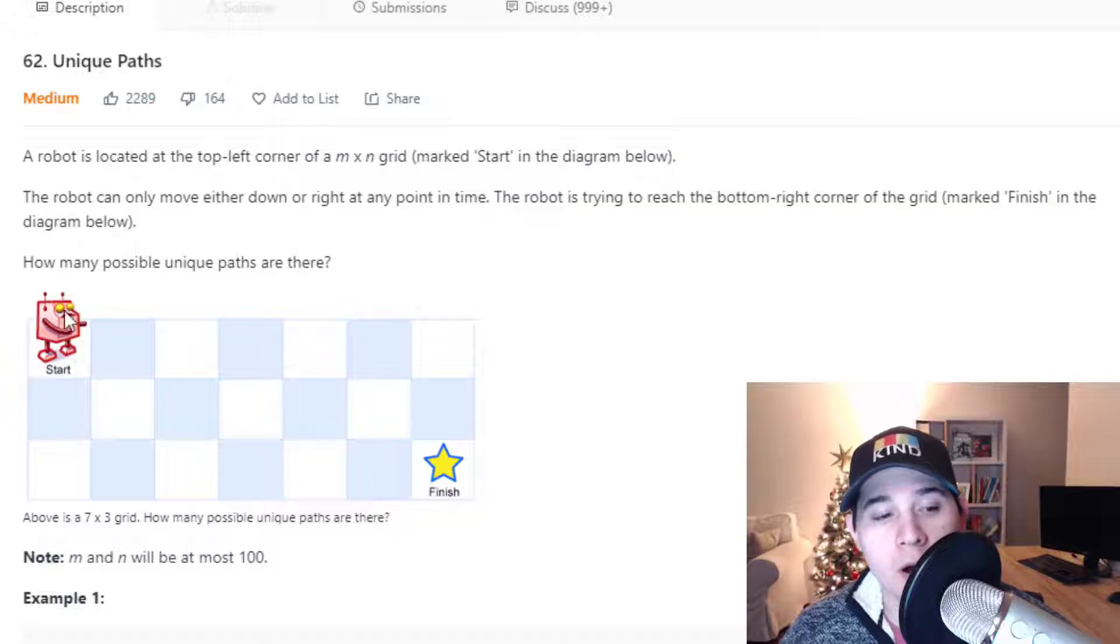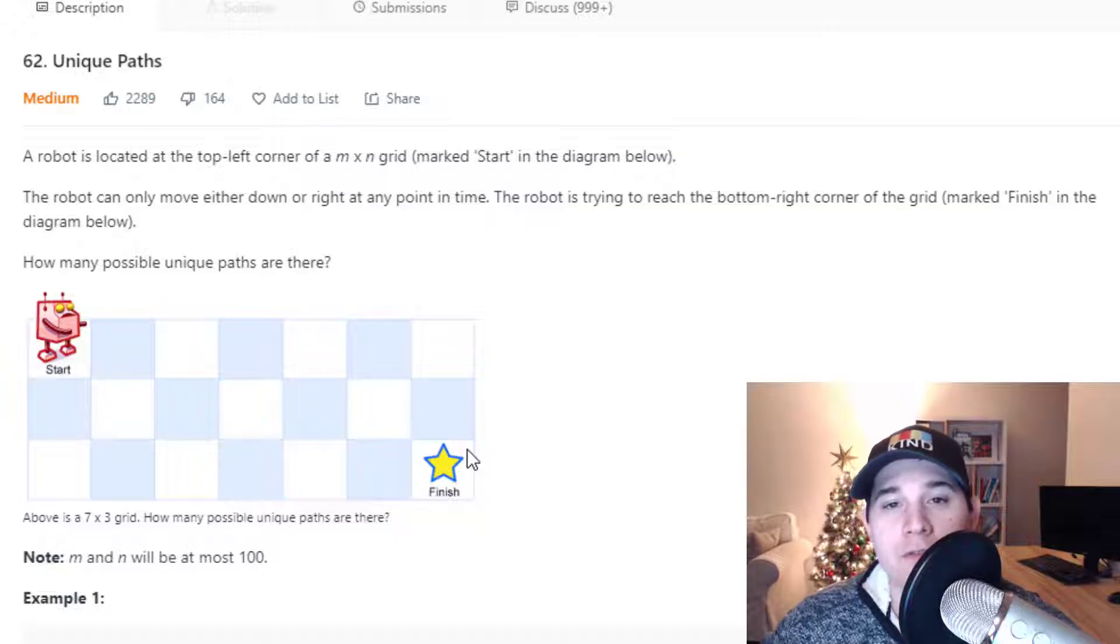And so our robot will always start at the top left which will be at the indices 0, 0 and then our finish will always be at the bottom right and that will be at the number of columns that we have minus one and the number of rows that we have minus one. So let's jump over to the whiteboard and I'll go over some examples.